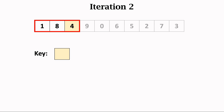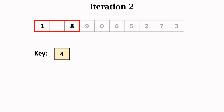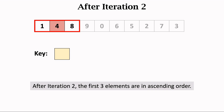Now the second iteration begins. The second iteration works on the first three elements. Take the rightmost element, 4, out of the subarray and let 4 be the key. Compare the key 4 with the element 8. Since 8 is greater than the key, move 8 one step rightward. Now compare the key 4 with the previous element 1. Since 1 is smaller than the key, we don't move 1. We found the position for inserting the key. Insert key 4 into the vacant position. After the second iteration, the first three elements are in ascending order.